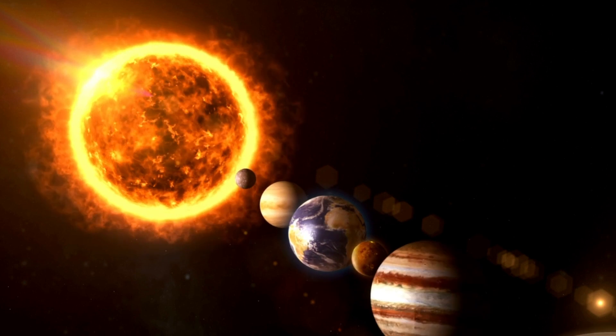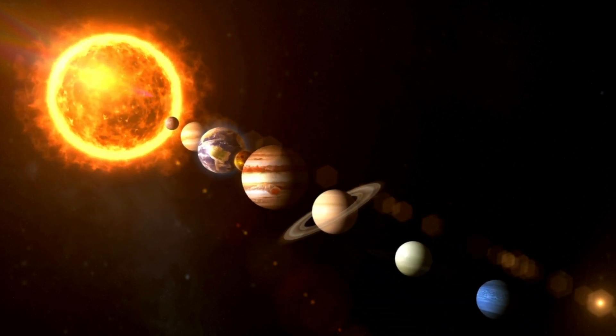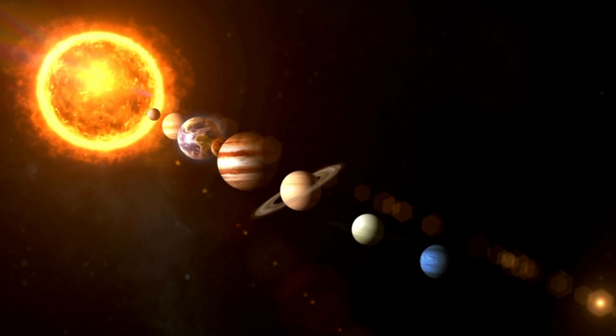The sun is not just a light bulb in the sky. It's the centre of our solar system. All the planets, including Earth, go around the sun because it has a mighty gravitational pull.